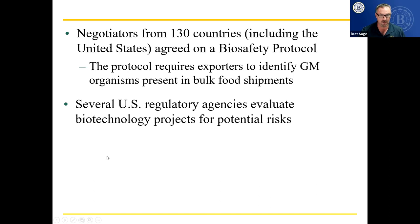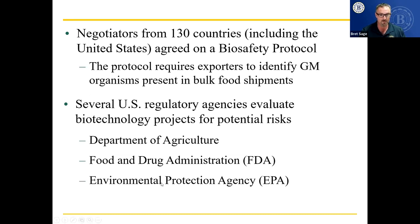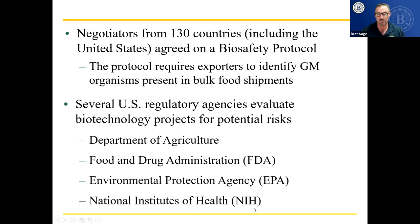Several U.S. regulatory agencies evaluate biotechnology projects for potential risks. The Department of Agriculture determines what farmers do and whether they're making good choices. The Food and Drug Administration determines whether food and drugs are safe. The Environmental Protection Agency assesses whether the overall environment is being protected. And the National Institutes of Health protect us against pandemics — they didn't do their job as well as they could have with COVID, partly because the administration at the time didn't give them all the tools they needed.